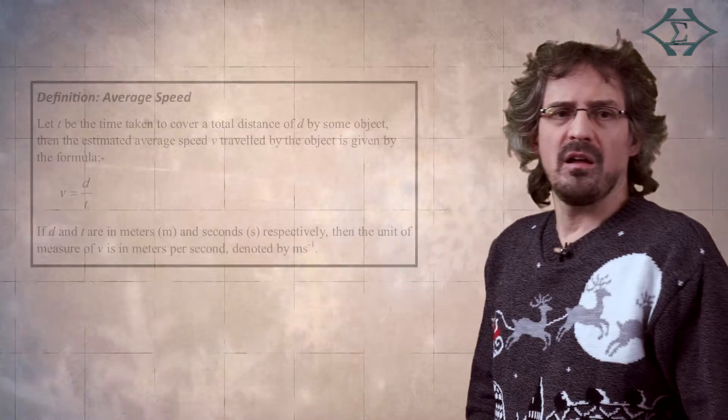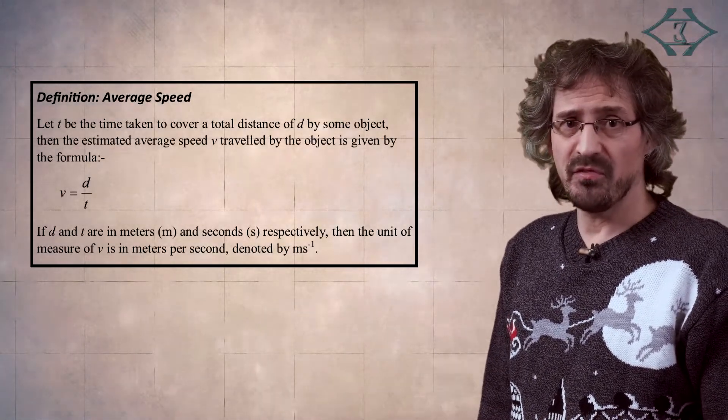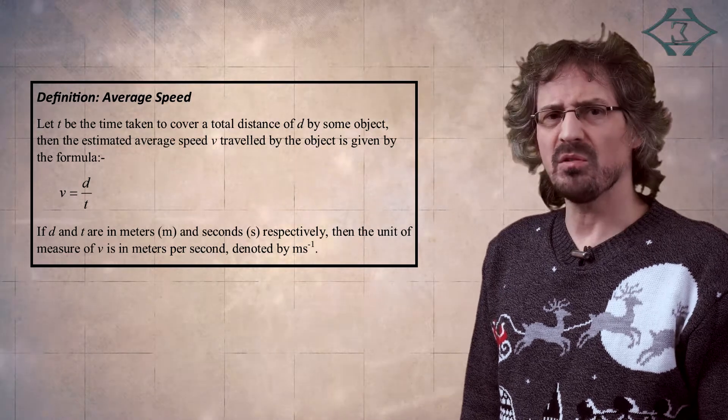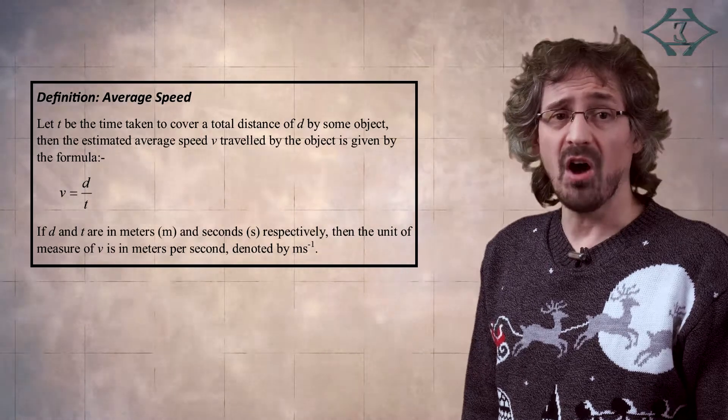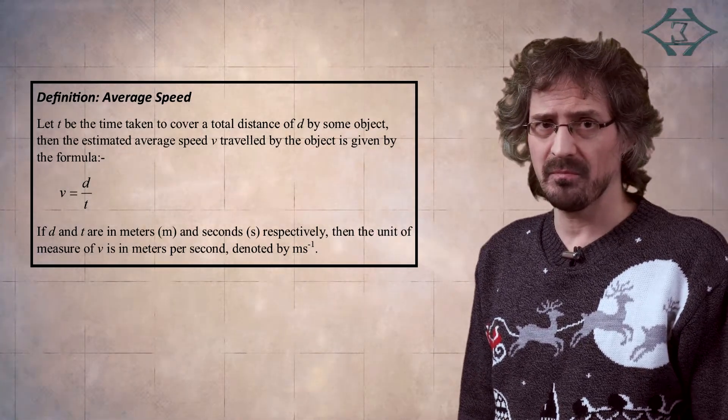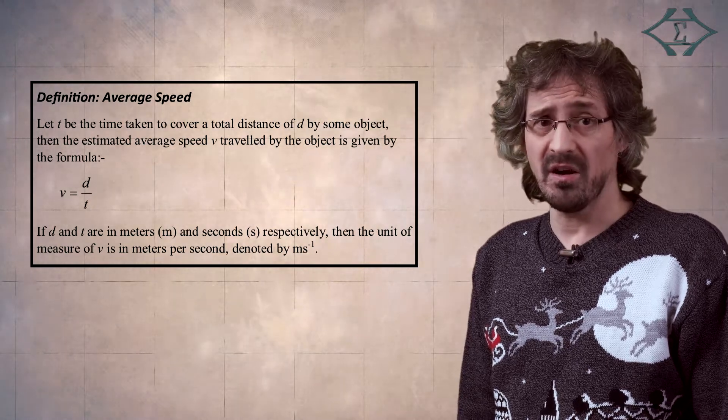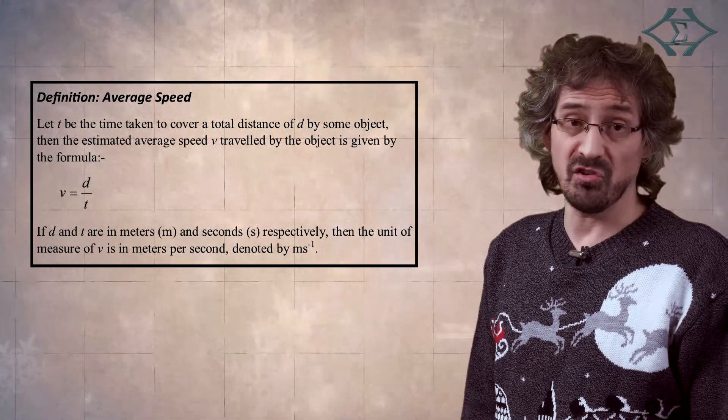Now, depending on the level of research that one is willing and able to pursue and the information that may be uncovered, one can approach this problem in a number of different ways. However, from our list of assumptions, one could proceed as follows. In order to ascertain an estimate for the average speed of Santa's sleigh, we shall determine estimates of the total distance travelled, together with the time available to achieve Santa's objective. The average speed is then calculated by dividing the former with the latter of these two estimates.